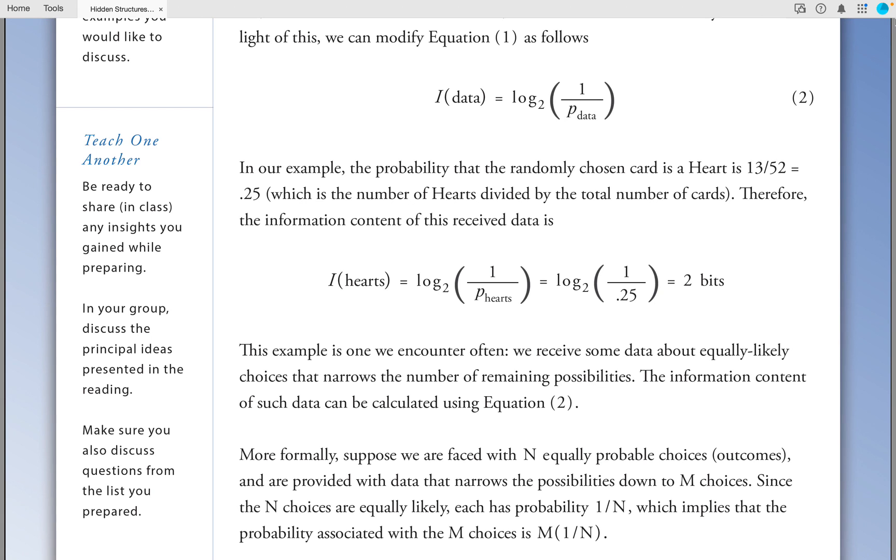Therefore, the information content of this received data is log base 2 of 1 divided by 0.25, which is equal to 2 bits. This example is one we encounter often. We receive some data about equally likely choices that narrow the number of remaining possibilities.